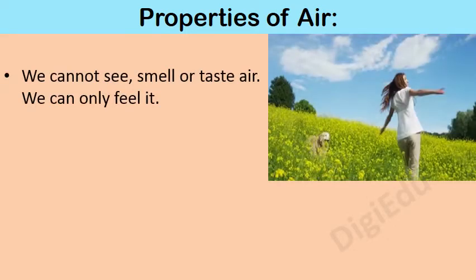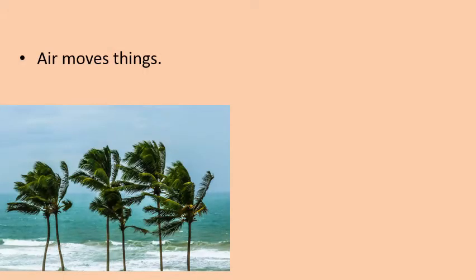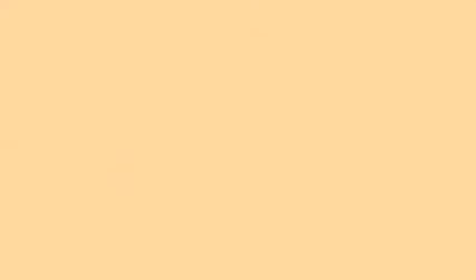Properties of air: We cannot see, smell, or taste air — we can only feel it. Air takes up space; if we blow a balloon, the balloon grows in size, which proves that air takes up space. Air moves things; for example, we see leaves and branches of trees moving when the air blows. Air exerts pressure; for example, when we suck liquid from a straw, the liquid rises in it. We can row a boat easily when the air blows from behind.